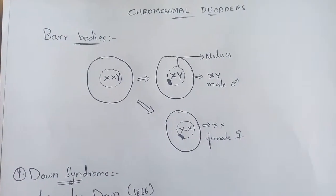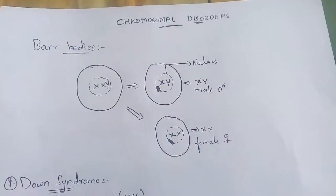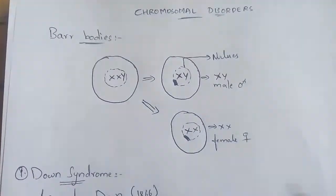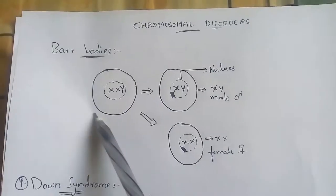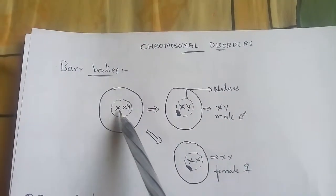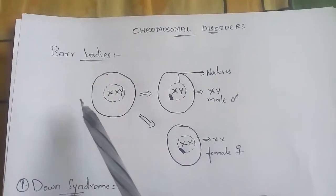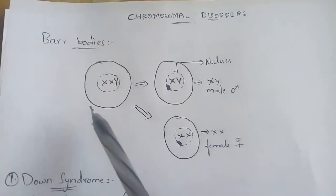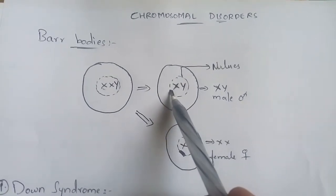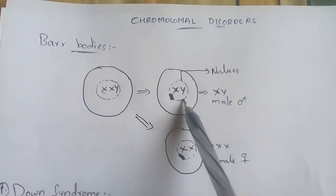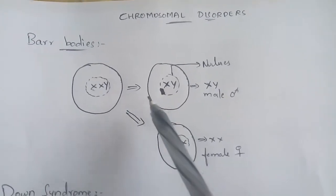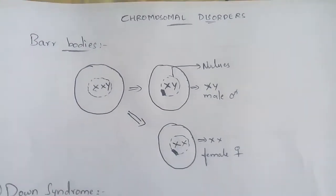Firstly, to talk about syndromes, you have to know about Barr bodies and what is meant by Barr bodies. Consider this is a cell and the inner structure as a nucleus. The nucleus mainly consists of XXY. Taking this as an assumption, one of the X chromosomes will be attached to the wall of the nucleus — it will be suppressed.